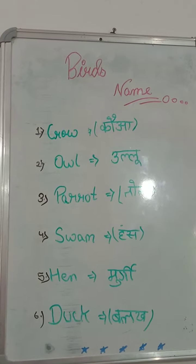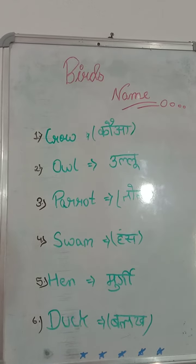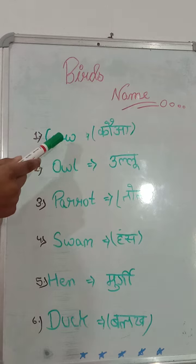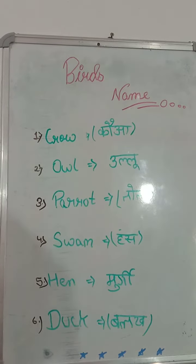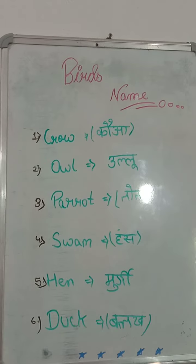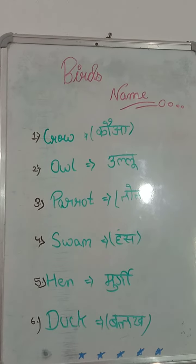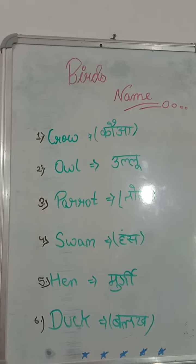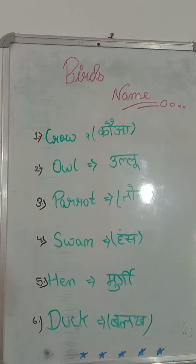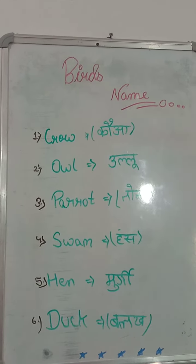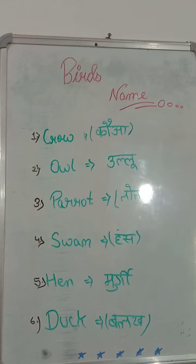The first bird is the Crow — C, R, O, W. The crow also eats roti and bread. The crow is one of the Omnivores — omnivores which eat both non-veg and veg, while Herbivores eat only veg.